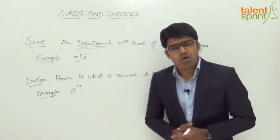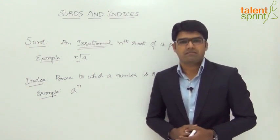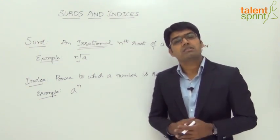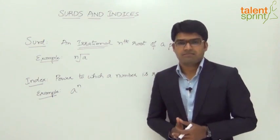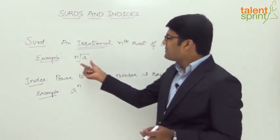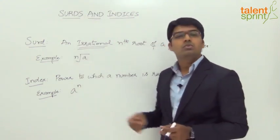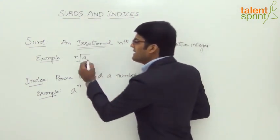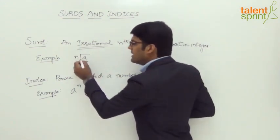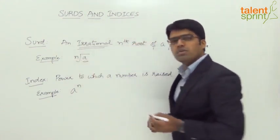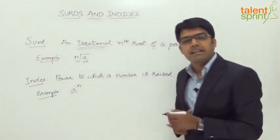In fact, long ago, the term 'surd' was another name for irrational. But these days, we use the term surd for only roots which are irrational. This is how a surd is represented: nth root of A, where A is called the radicand. This symbol — the root symbol — is also known as the radical sign, and n is known as the radical power.